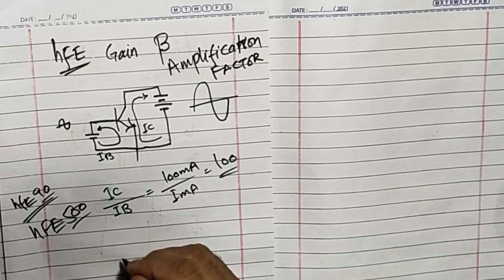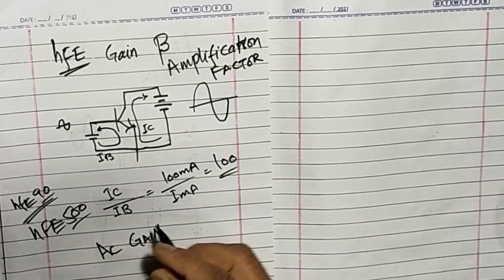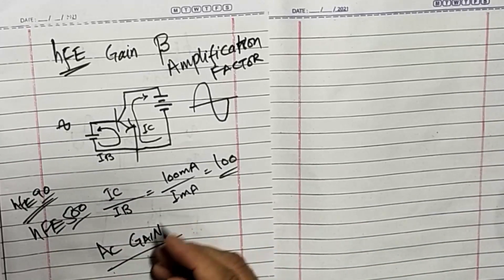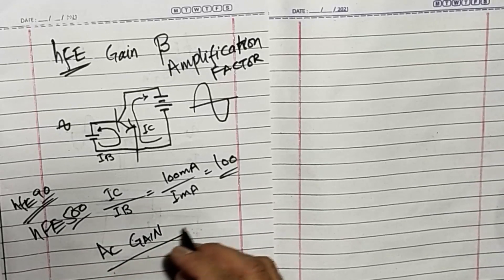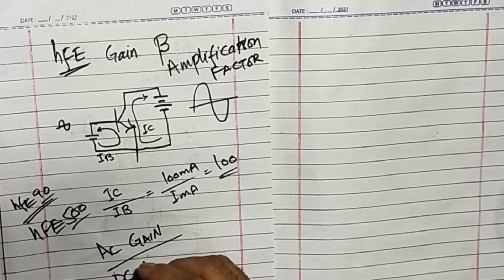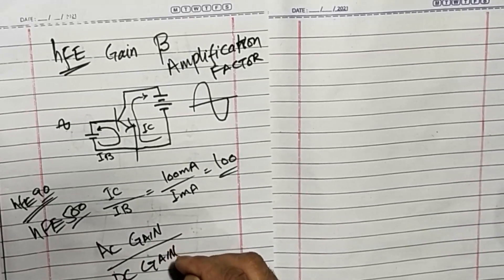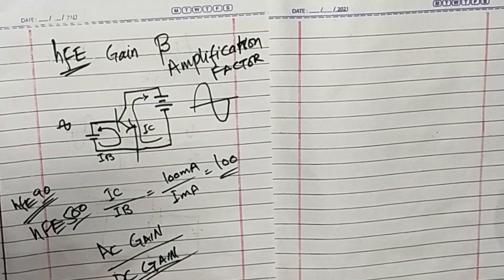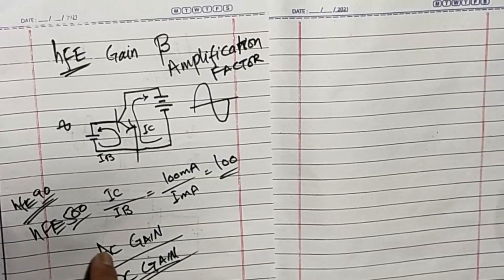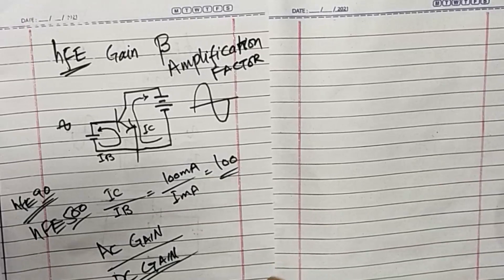Some transistors have AC gain. In some datasheets we can find hFE AC or AC gain and DC gain, two different values. While selecting a transistor, we have to take care for the gain.